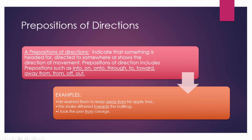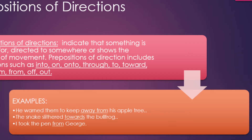Here are examples of preposition of direction. There are also many other types of prepositions — prepositions of manner, attitude, and effect, among others. Example one: He wanted them to keep away from his apple tree — the preposition is 'away from.' Example two: The snake slithered towards the blue frog — the preposition is 'towards.' Example three: I took the pen from George — the preposition is 'from.'